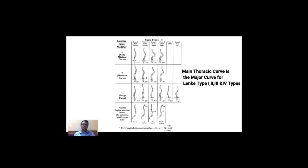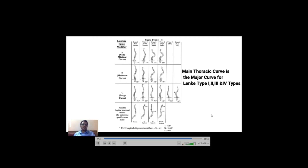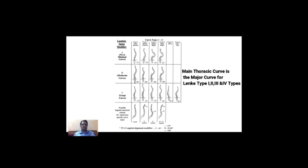All four curve types can be sub-classified into A, B, and C depending on the CSVL relation with the apical vertebra, and each pattern can be further classified into normal, minus, or plus depending on the kyphosis between T5 and T12. Type 5 and Type 6 are the only curve types where the thoracolumbar or lumbar curve is the major curve. In Type 5, only the thoracolumbar and lumbar curve is structural; in Type 6, main thoracic and thoracolumbar lumbar are structural but proximal thoracic is non-structural. These two patterns always have modifier C, which is why there are only 42 classifications rather than 54.